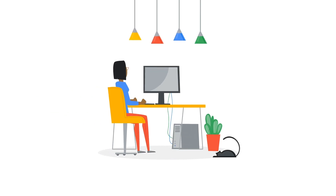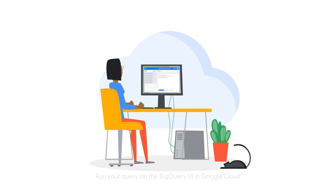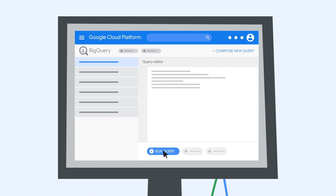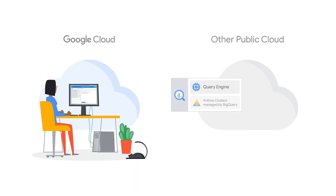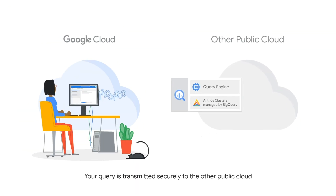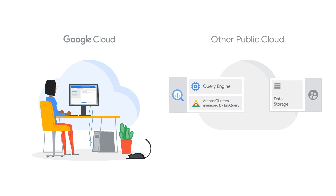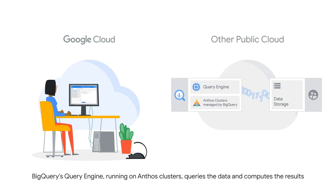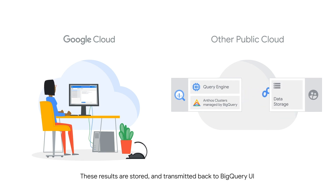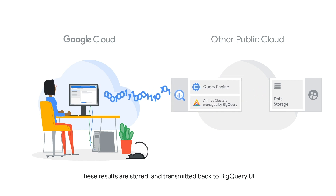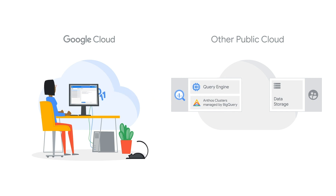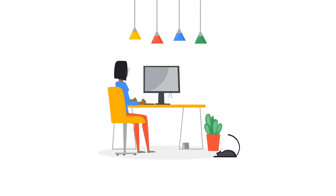You can start using BigQuery Omni right away. There's no need to do any formatting or transformation of your data. BigQuery Omni supports formats such as Avro, CSV, JSON, ORC, and Parquet. You also don't need to move or copy your raw data out of the other public cloud, do any cluster management, or provision any resources. All computation occurs within BigQuery's multi-tenant service, which is running in the region where the data is currently located.